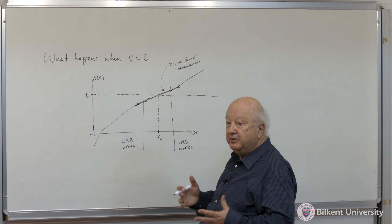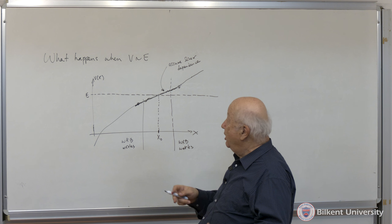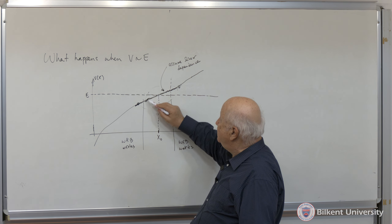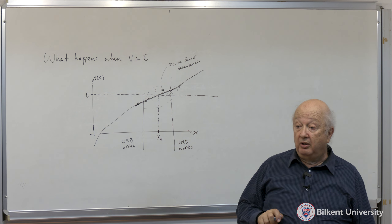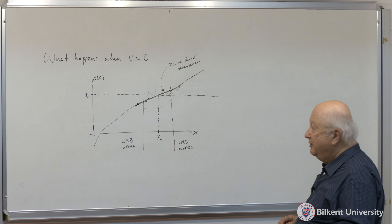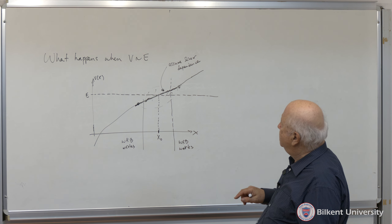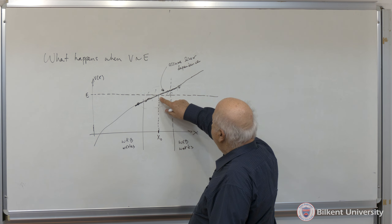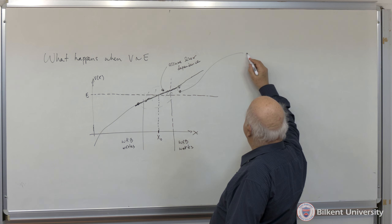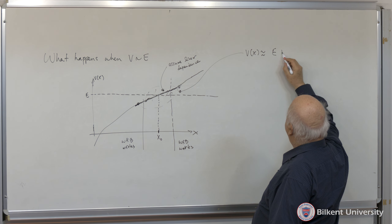Student question: Why are you interested in the turning point? What's the significance? What we are trying to do is match the WKB solution on the left, which we can treat quite accurately, to the WKB solution on the right, which is also accurate. But we do not know what's going on in the transition region. We take this region and approximate it — this approach works so well that it's commonly used.